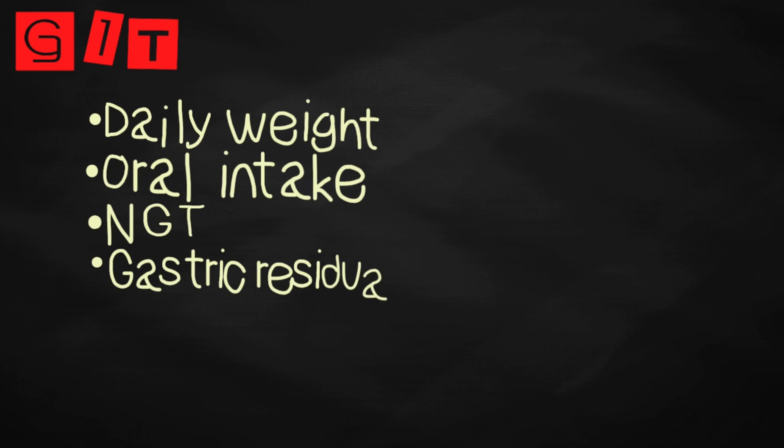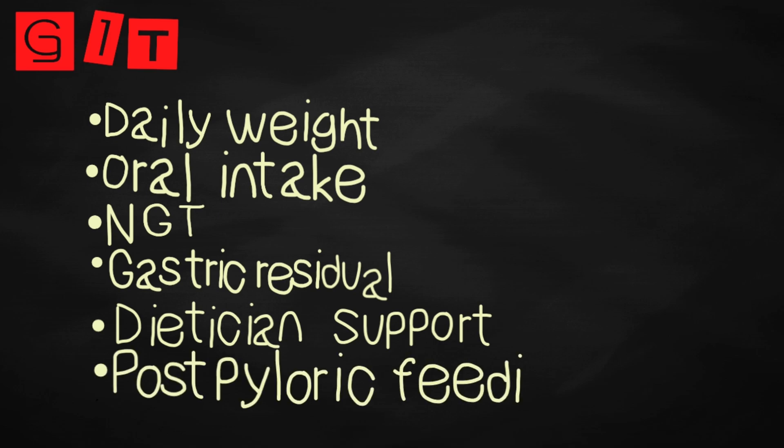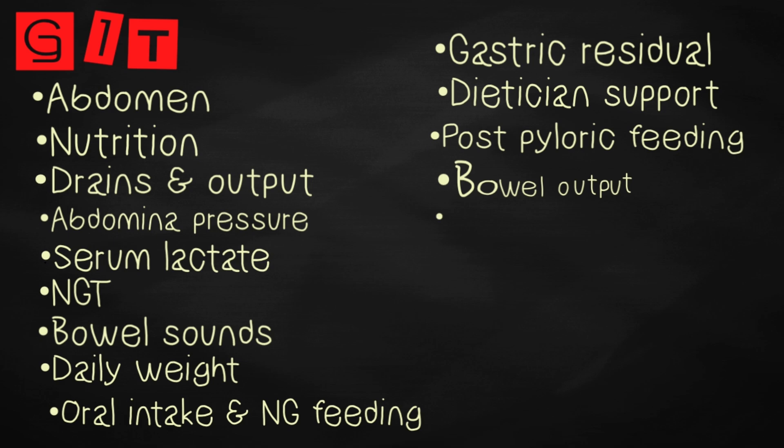Oral intake, NG feeding, and any gastric residual volume should be used to calculate energy intake. If available, dietitian support and the use of feeding guidelines will aid adequate calorie, protein, fat, essential amino acid, and mineral input. If NG feeding fails, consider the use of post-pyloric feeding via tube inserted through the stomach into the proximal small bowel.